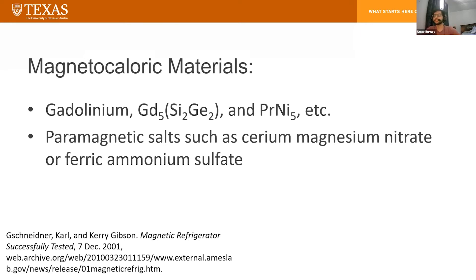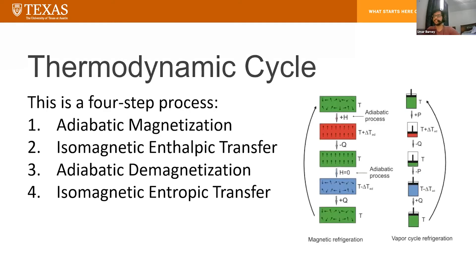Moving on to our thermodynamic cycle — there are four important steps, very similar to vapor cycle refrigeration. I have a diagram here showing the whole process. To start, we have adiabatic magnetization: the magnetocaloric material is placed in an insulated environment, and increasing the external magnetic field causes the magnetic dipoles to align. That decreases the material's magnetic entropy and heat capacity, because you're reducing the degrees of freedom in your material.